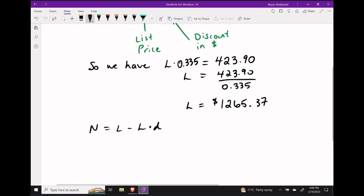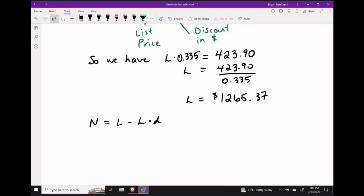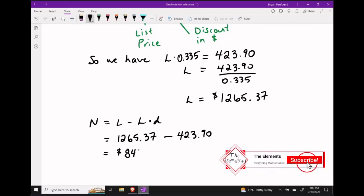And then to finish off this question to find the net price to the buyer we can take the list price which we just found of $1,265.37 and we can subtract the discount in dollars which we know is $423.90. Performing this subtraction we get $841.47.